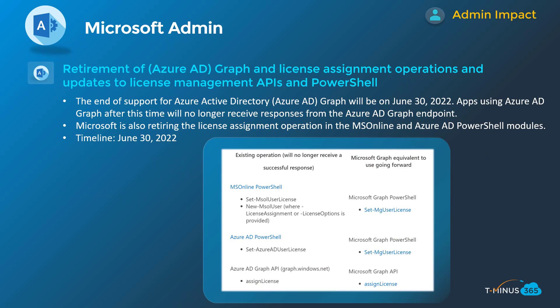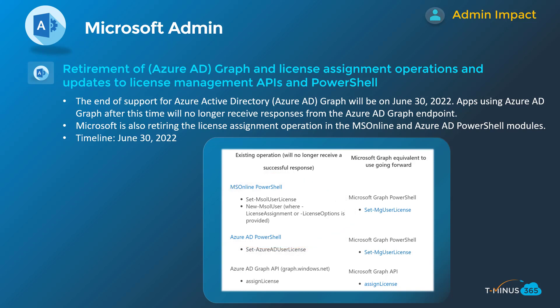The final update is the end of support for Azure AD Graph, which will happen on June 30th, 2022. This also affects the MS Online PowerShell commandlets — in particular, ones for setting a user license or creating a new user and assigning them a license at the same time, which may be in many of your scripts or automation tasks for user change management. Pay attention to this. Get familiar with the replacement commandlets and make sure you don't have automation tasks running behind the scenes that rely on those commandlets in the future.